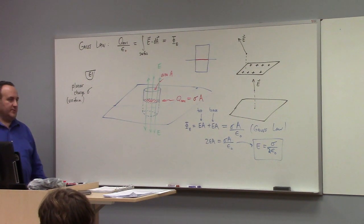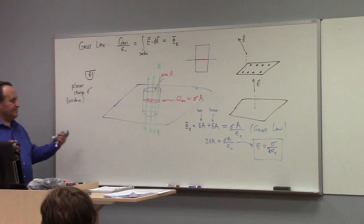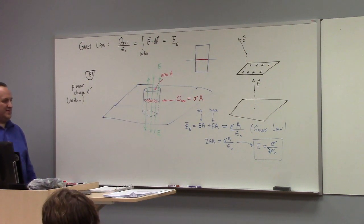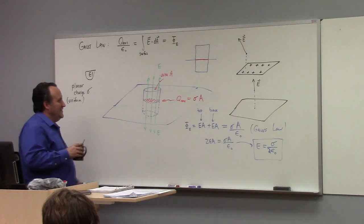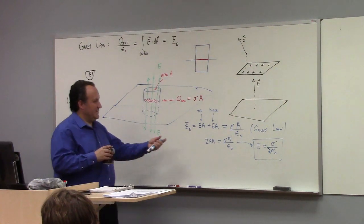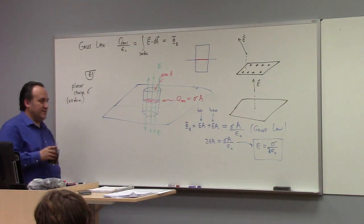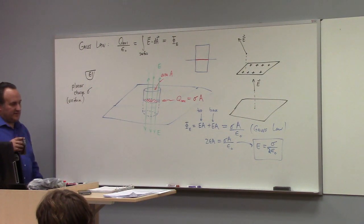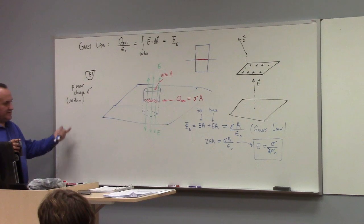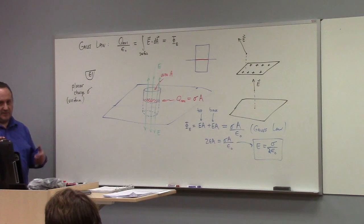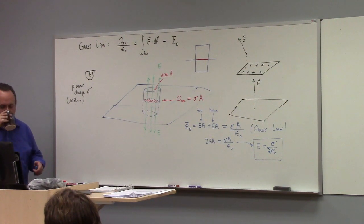As a general point of order, when we're doing one of these Gaussian surface constructions, the area A shouldn't appear in the answer — it has to disappear in the algebra. Because the electric field should only depend on the charge distribution and maybe some geometric relation of your source point to the field point.